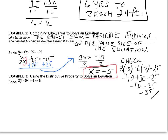This next example is about using the distributive property to help solve an equation. When you have a number multiplying by a group with addition or subtraction inside, both numbers inside the group must be multiplied separately. So 2 has to be multiplied by the 1, giving 2 times 1, and then 2 times negative 5X. When we break up this group, we get 2 minus 10X. The plus 4 is separate, not connected to the grouping, and the negative 8 is on the other side.